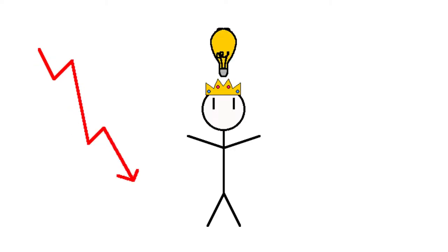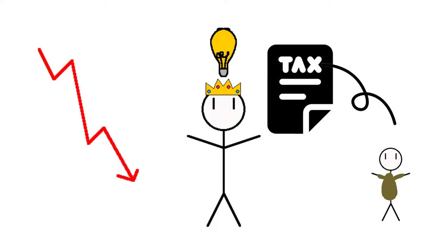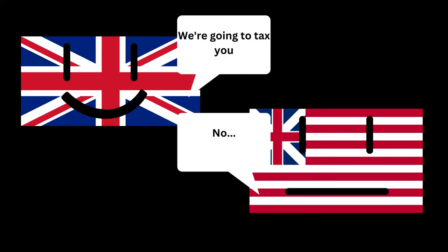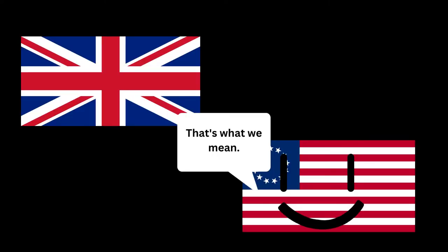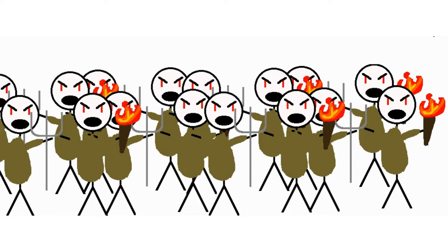The French economy was in a bad state, so the king had an idea: he would tax the commoners. As we know, taxing commoners has gone well before in history — see: the American Revolution. Anyways, the commoners got mad. Like, really mad. This is how the revolution started.